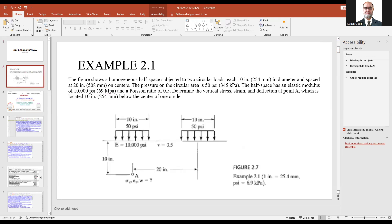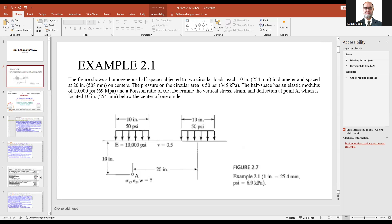This is the example. This example has been taken from the book, and there is one reason: I want to make totally sure whatever answer we are getting from the example in the book should match the output of the software. We have been given a single half space subject to two circular loads. These two circular loads represent the dual wheel of any vehicle, so we have two uniformly distributed loads.